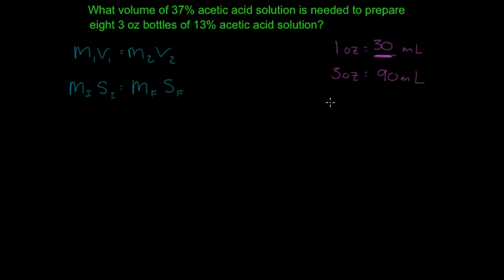Now if you wanted to set that up, you could set it up like how we normally do it. 1 ounce equals 30 milliliters. And so how many milliliters are in 3 ounces? You cross multiply and you divide and that will give you 90 milliliters.